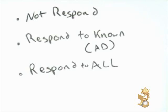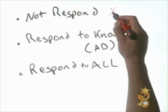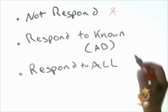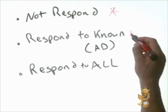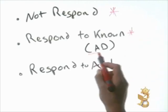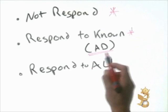When planning on deploying a WDS server, we can configure it to respond to clients in three different ways. The first method is to not respond at all — that's having a WDS server that's enabled and configured but not responding to any clients. The second method, which is very beneficial, is to respond to known computers. The key to using respond to known is to make sure you have an Active Directory environment available.